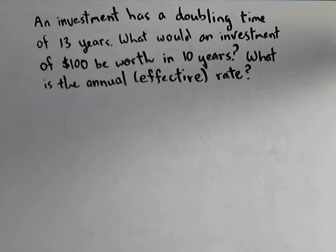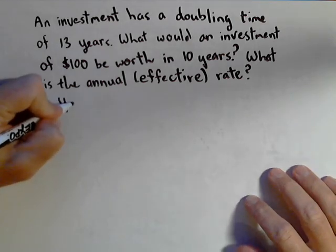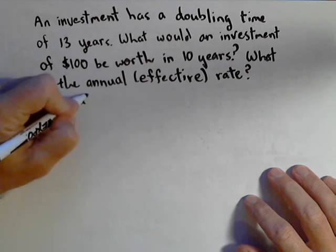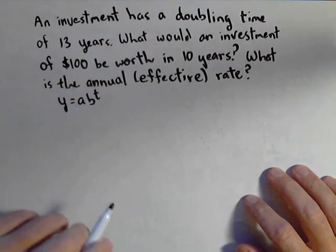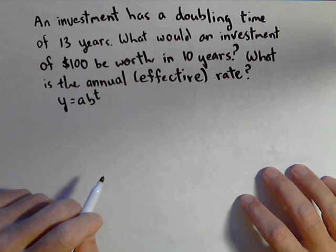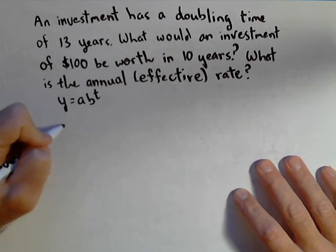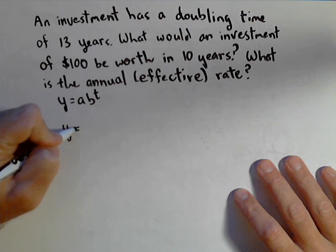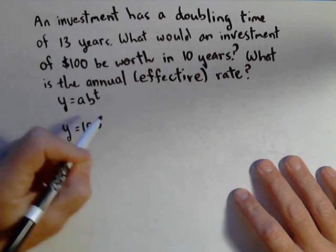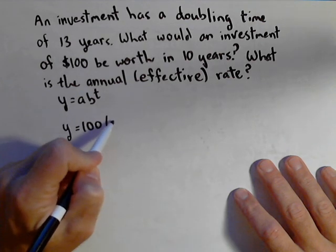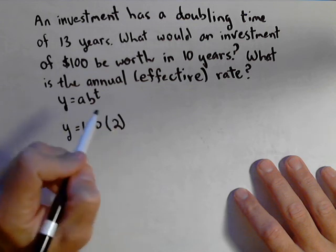So this is gonna be an exponential model. And it turns out if we use this form, a, b to the t, there's a really slick way of dealing with doubling time. So I know that I'm gonna start off with $100. And I know that it is gonna be doubling. And then here's what's really neat.